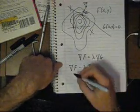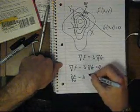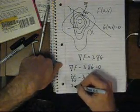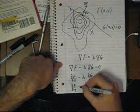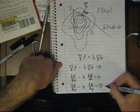And then when we look at the components of that equation, the x component would be ∂f/∂x minus lambda ∂g/∂x equals 0. And ∂f/∂y minus lambda ∂g/∂y equals 0.